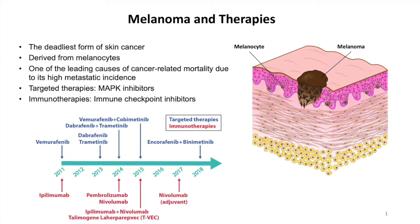For example, the targeted therapy agents, BRAF inhibitors vemurafenib and dabrafenib, only show efficacy in melanoma patients with specific BRAF mutations, and acquired resistance invariably occurs.